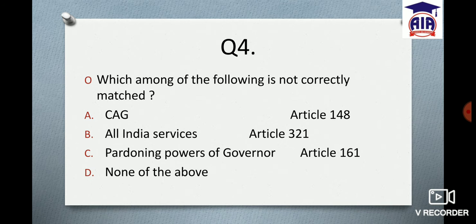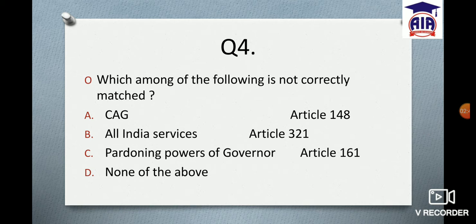Next question: Which among the following is NOT correctly matched? CAG (Comptroller and Auditor General) — Article 148. All India Services — Article 321. Pardoning power of Governor — Article 161. The last option is None of the above. Type your answer in the comment section — the answer will obviously be revealed in the next lecture.